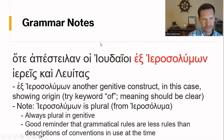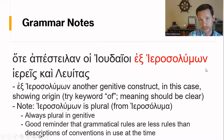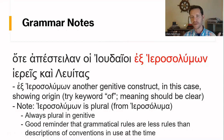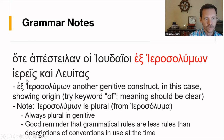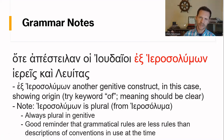So we have hote apesteilan hoi Ioudaioi — 'when the Jews sent.' Now what about ex Hierosolumōn? Ex Hierosolumōn: that -ōn ending is genitive, and also ek or ex is a preposition that always, always takes a genitive after it. So ex Hierosolumōn is a genitive construct. You can translate ek as 'out of' or 'from.' Try 'of' and it works: 'the Jews of Jerusalem.' That tells you where they're coming from. If you were to call me 'Chris of Florida,' that means I come from Florida — same idea: 'the Jews from Jerusalem.'